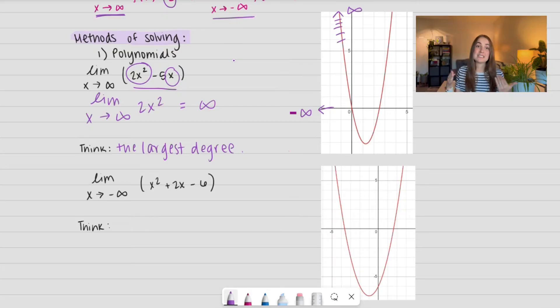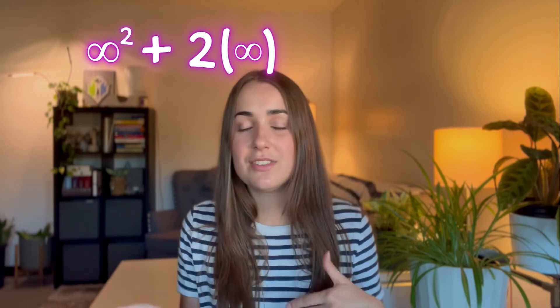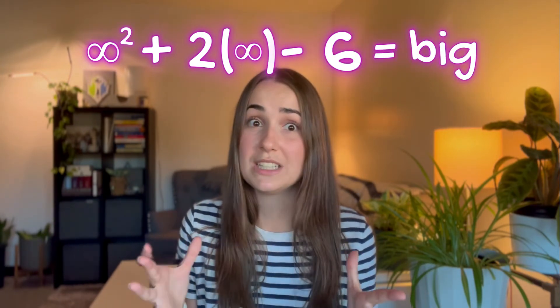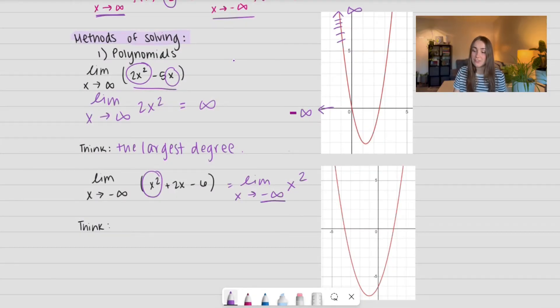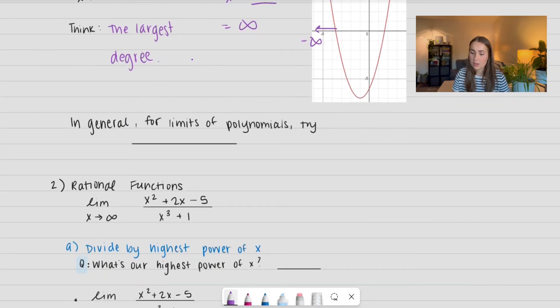Let's go ahead and take the limit as x approaches negative infinity of this other polynomial. Again, I'm going to use my shortcut and I'm just going to take the largest degree. So I'm going to rewrite this as the limit as x approaches negative infinity of just x². Because if I add 2 times infinity and subtract 6, it doesn't make a difference because our numbers are just really big at that point. So if I plug in negative infinity into x², squaring a term is always going to make it positive. And so this ends up going to infinity. And if we think about it in terms of a quadratic function, we have as x approaches negative infinity, our function is going up to positive infinity. So again, think about the largest degree. In general, for limits of polynomial try using direct substitution because that typically gets you where you want to be.